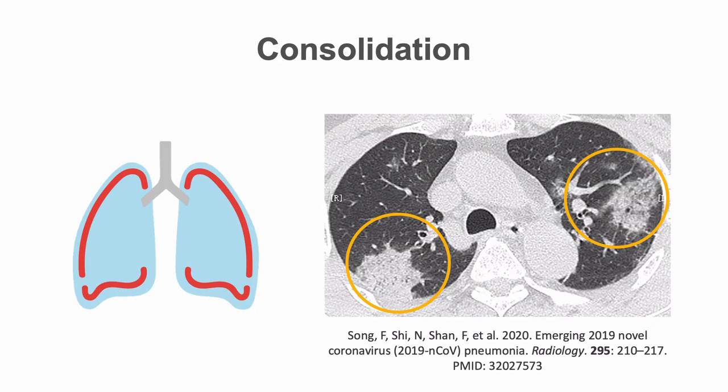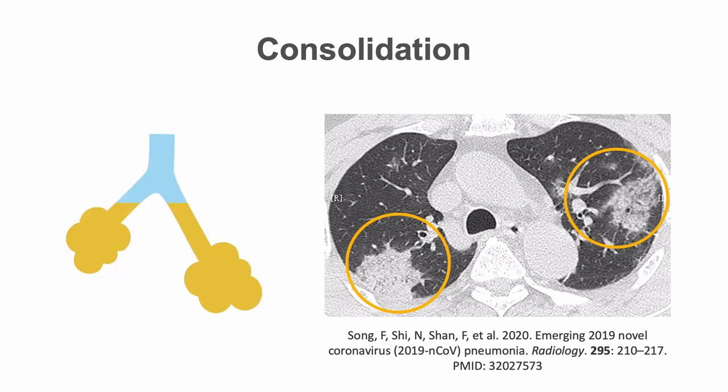Bilateral, peripheral, and basal lung consolidations are also commonly seen, indicating a complete filling of the air spaces by inflammatory exudates. It is common to see both ground glass opacities and consolidations in patients with COVID-19. Ground glass opacities are the main findings, but they can coexist with consolidations or evolve to consolidations. Sometimes, a COVID-19 positive patient may show only consolidations on chest CT.